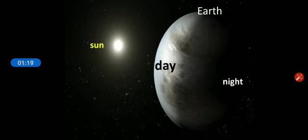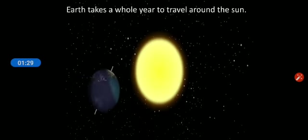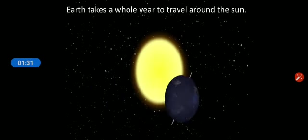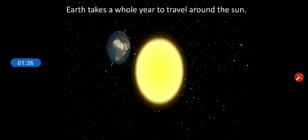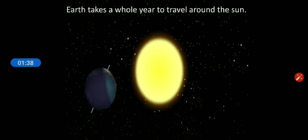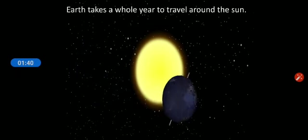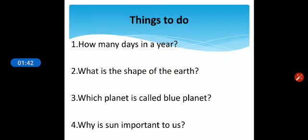The Earth spins slowly round and round. It takes a whole day to spin round once. Dear students, the Earth also travels around the sun. The Earth takes a whole year to travel around the sun.